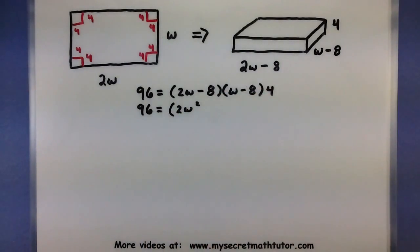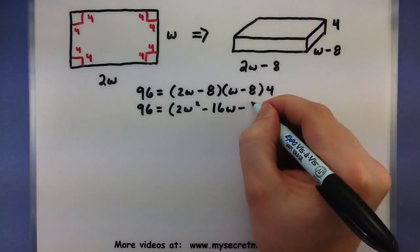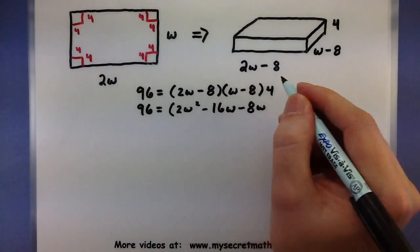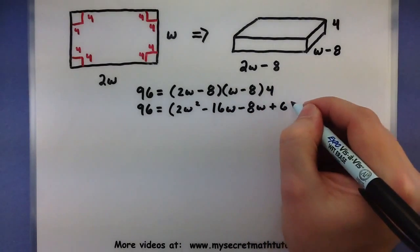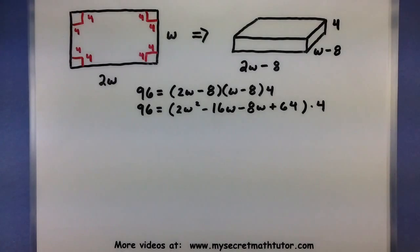We'll do our outside terms, minus 16W. Inside terms, minus 8W. And the last terms, plus 64. All of this multiplied by 4. Awesome. Looks good.